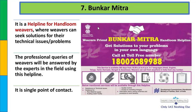सातवाँ scheme है बुनकर मित्र. जैसे नाम से पता चल रहा है, यह एक सहायता केंद्र होगा. जितने भी handloom weavers हैं उनके लिए help line center है - single point of contact basis पर. यह toll-free number है, 24x7 available है. बुनकर मित्र के अंदर आप solution पा सकते हो.